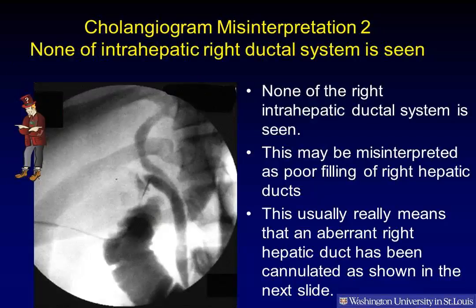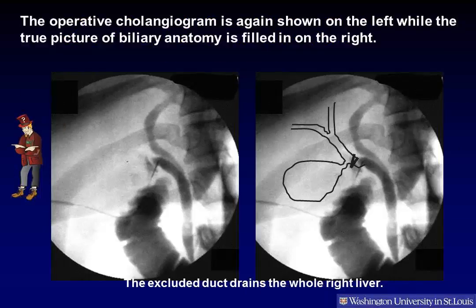Cholangiogram misinterpretation 2: None of the intrahepatic right ductal system is seen. This may be misinterpreted as poor filling of the right hepatic ducts. However, this usually means that an aberrant right hepatic duct has been cannulated, as shown on the next slide. The operative cholangiogram is again shown on the left while the true picture of biliary anatomy is filled in on the right.